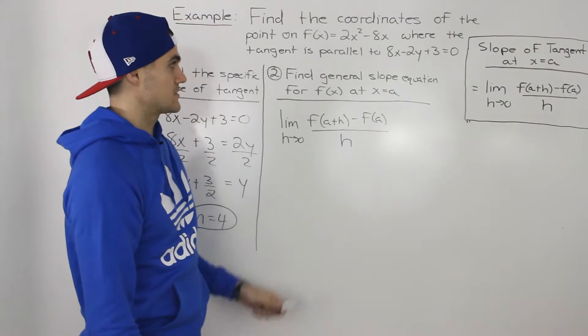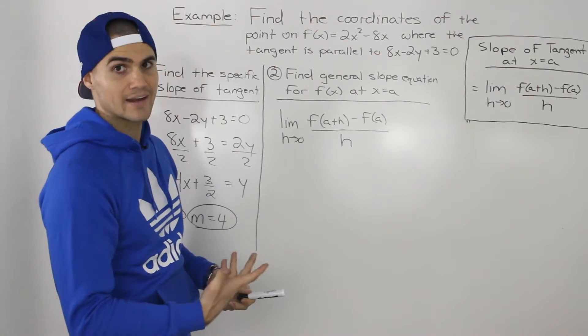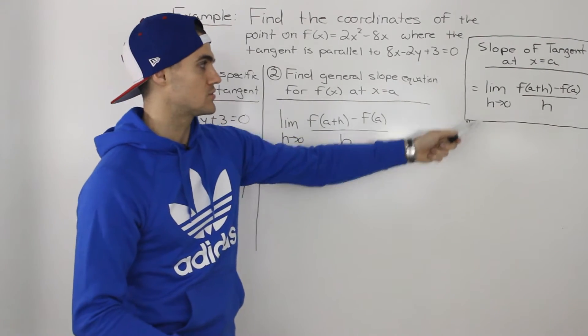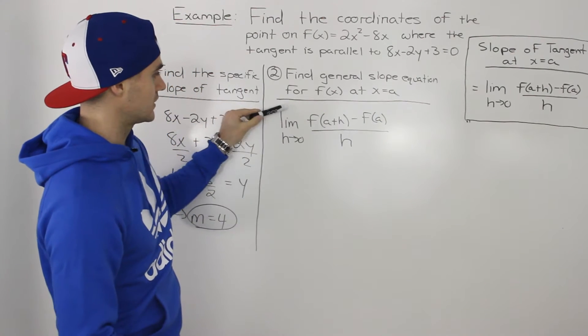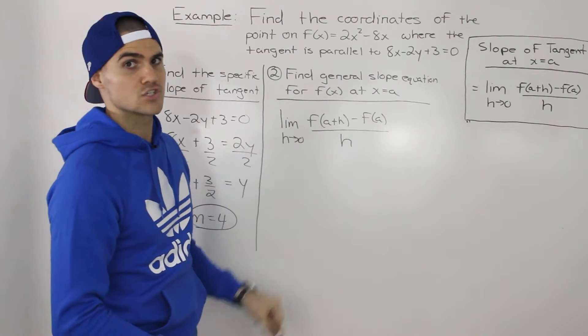Now the second step is we have to find the general slope equation for this function f(x) at a general point x = a. And to do that, we're going to have to use the difference quotient or the slope of the tangent formula. So we've got the limit as h goes to 0 of [f(a+h) - f(a)] / h.